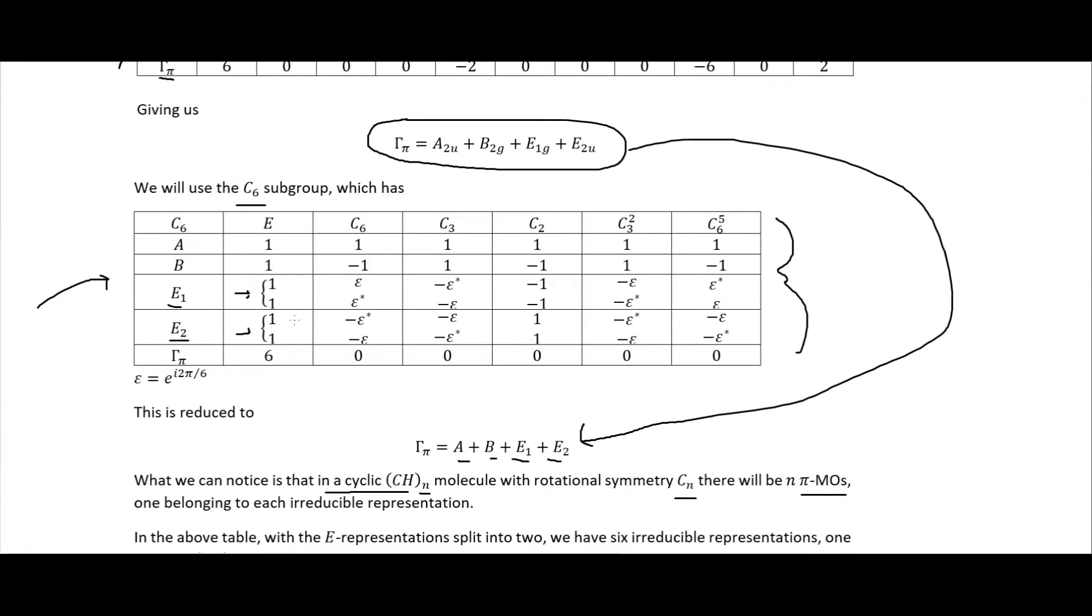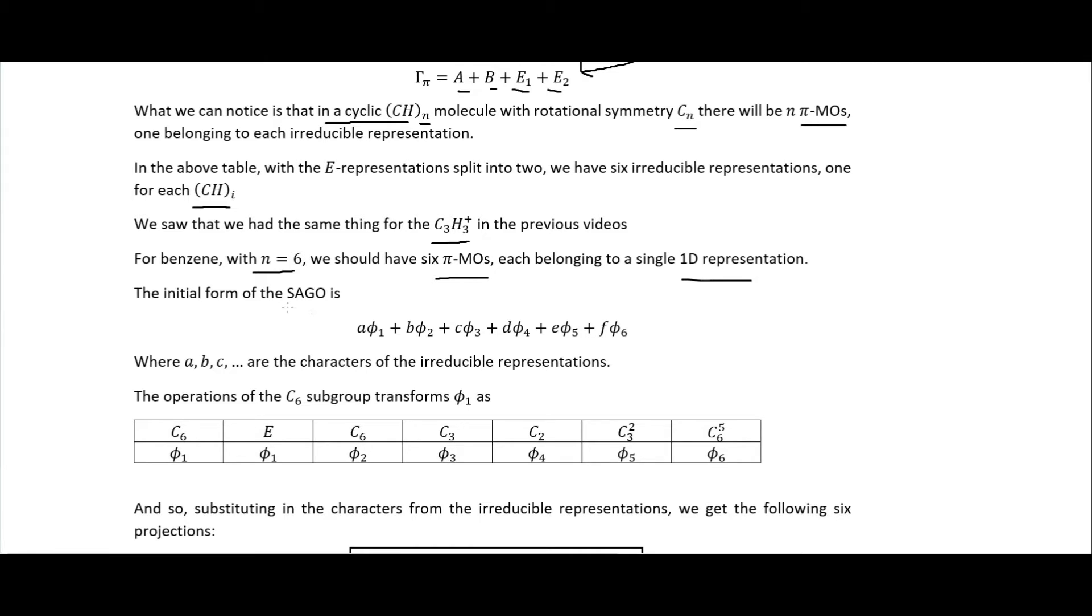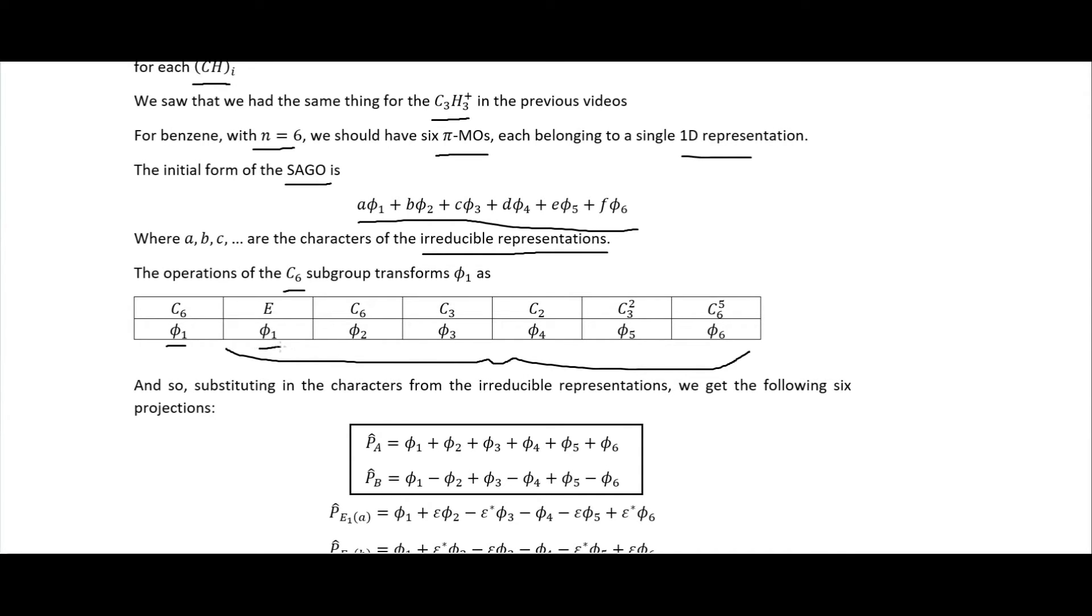And so our symmetry adapted group orbital will have a form that looks like this, where these coefficients in front of it are the characters from the irreducible representations from the table above. And so the operations of our C6 subgroup on the phi atomic orbital here, if we just do each of these on that phi, sort of like we did a couple of videos ago when we were looking at the cyclopropaneal cation, we just get the phi1, phi2, phi3, phi4, phi5, and phi6 here.